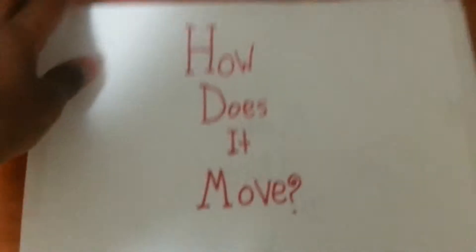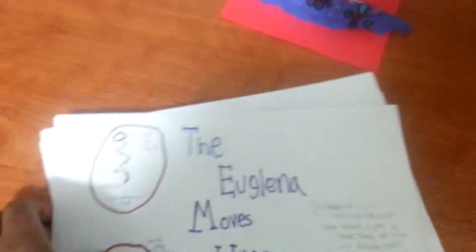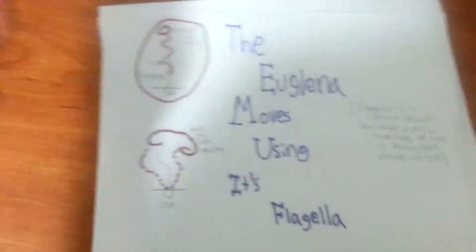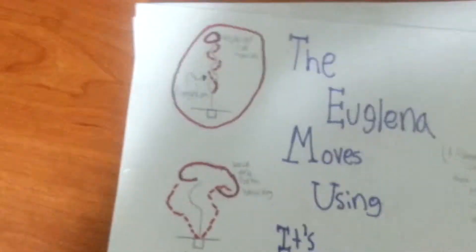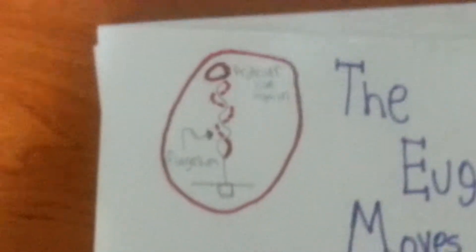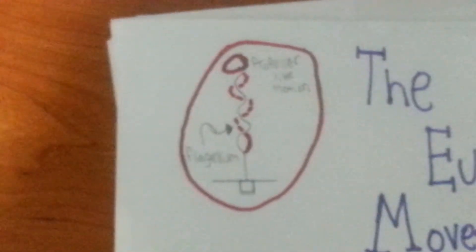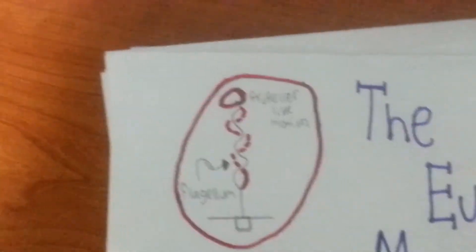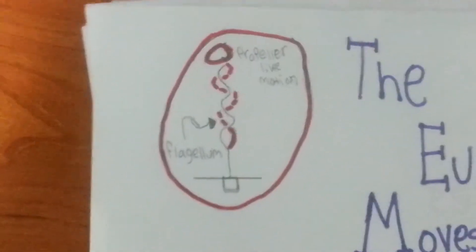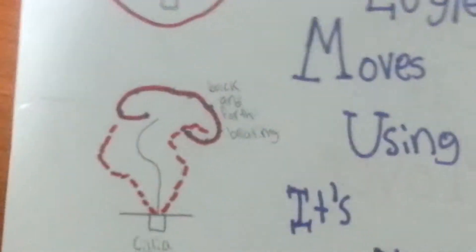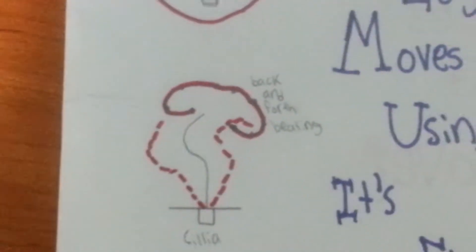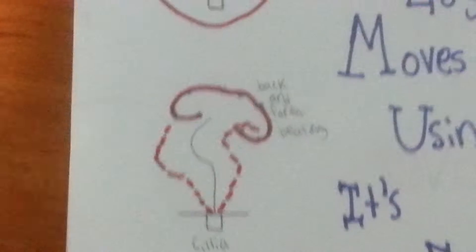So how does it move? Well, the euglena moves using its flagella. Shown here, it has a propeller-like motion, unlike the cilia, which has a back and forth beating motion.